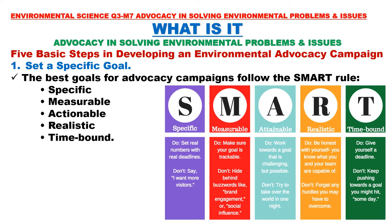The best goals for advocacy campaigns follow the SMART rule: S — Specific: set real numbers with real deadlines. M — Measurable: make sure your goal is trackable. A — Attainable: work towards a goal that is challenging but possible. R — Realistic: be honest with yourself; you know what you and your team are capable of. And T — Time-bound: give yourself a deadline.